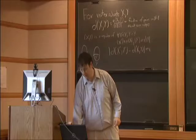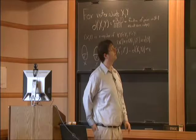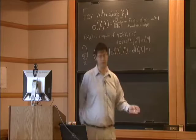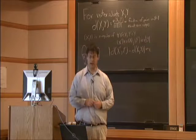The regularity lemma says you can partition any graph into m parts so that all but a small fraction of pairs of parts are epsilon-regular—they behave randomly between pairs. This is a rough structure result for all graphs and one of the most powerful tools in graph theory.